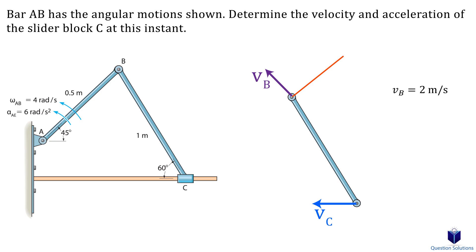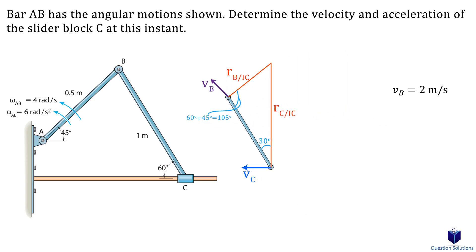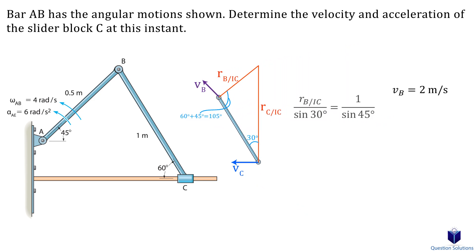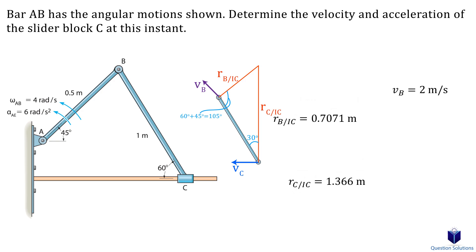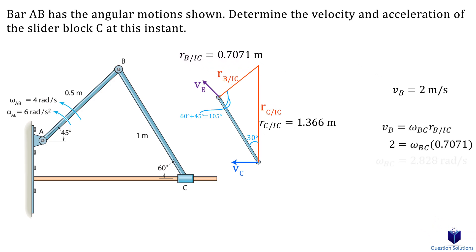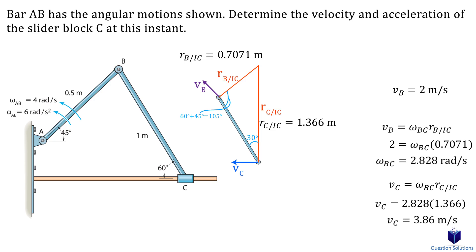I'll go through these steps fast because in the previous video I go through how to find the IC step by step. We draw perpendicular radial lines to the velocity vectors to figure out the IC point. Using the triangle formed, we can figure out the angles inside. Then using the law of sines, we find the lengths. Using those lengths, we find the angular velocity of link BC. Don't forget we already found the velocity at point B. Now that we know the angular velocity, we can figure out the velocity of slider C.